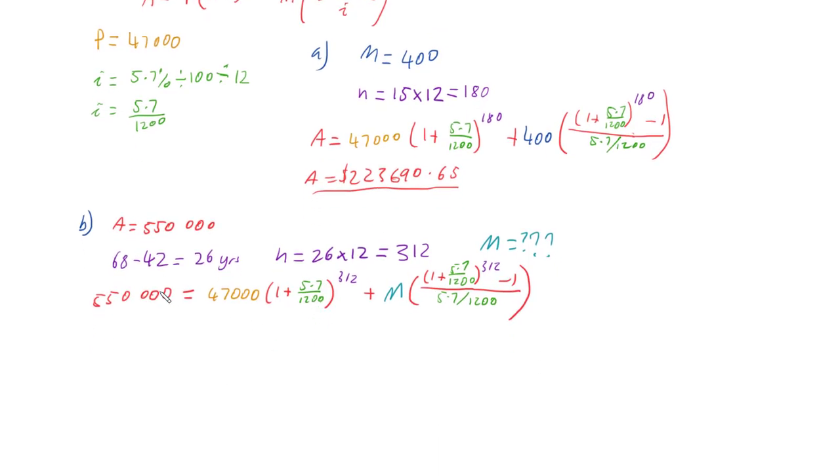So we've got this equation, 550,000 equals all of this, and we want to work out M. So we need to get M on its own. Now M is being multiplied by this, and then having this added on. So we're going to take this bit, and we're going to subtract it off both sides. On our left, we're going to have 550,000 minus 47,000 times (1 plus 5.7 over 1200) to the power of 312. And on our right, we're left with M times (1 plus 5.7 over 1200) to the power of 312 minus 1, over 5.7 over 1200.